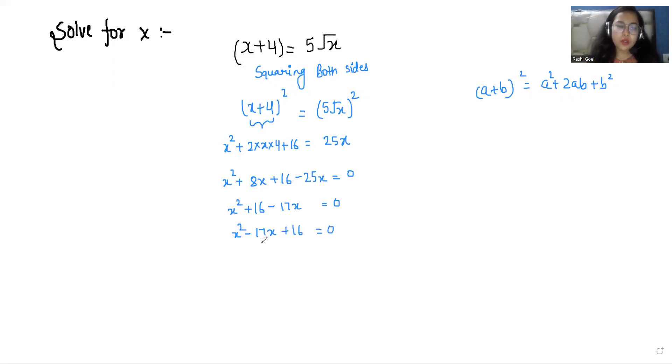Now it looks like a quadratic equation. So we are doing middle term split. We can write it as x² - 16x - x + 16 equals 0.